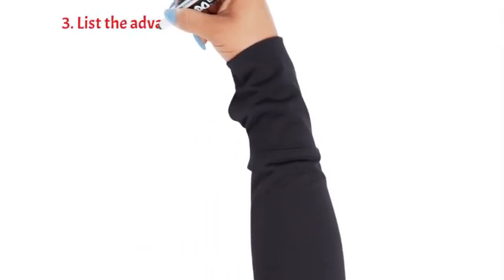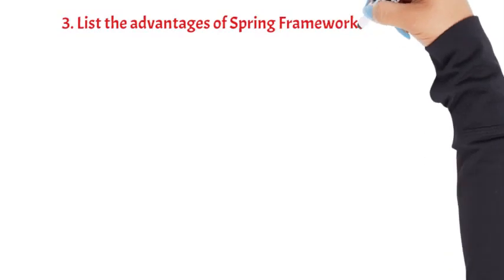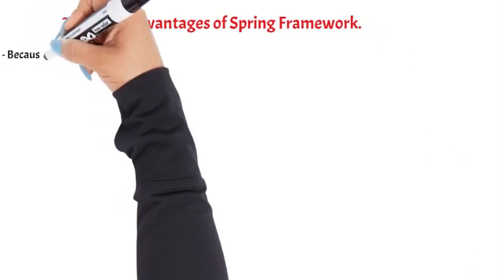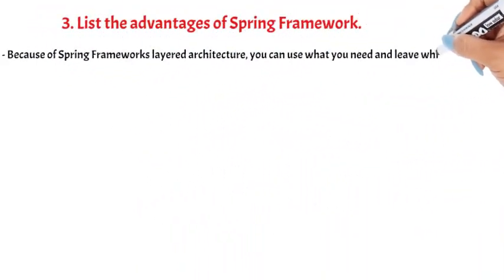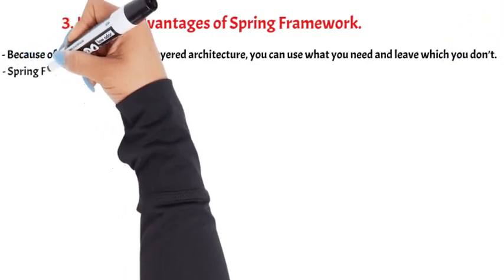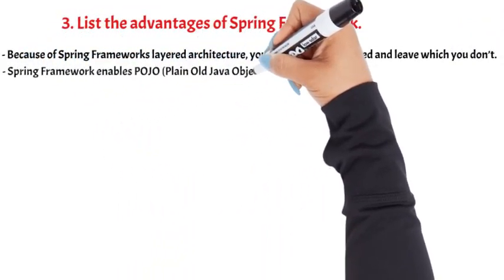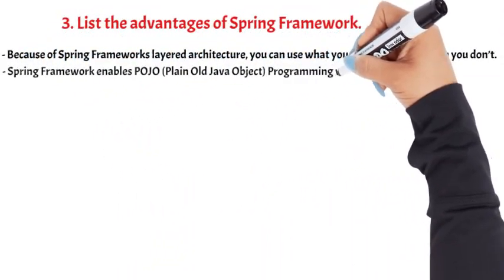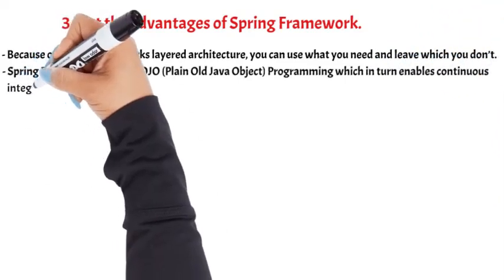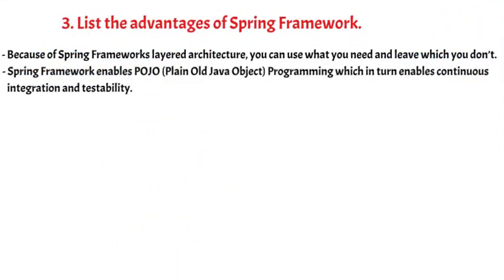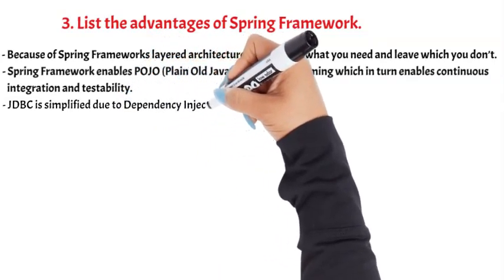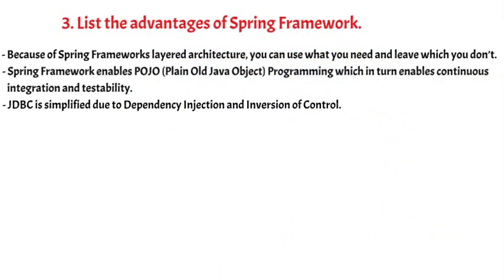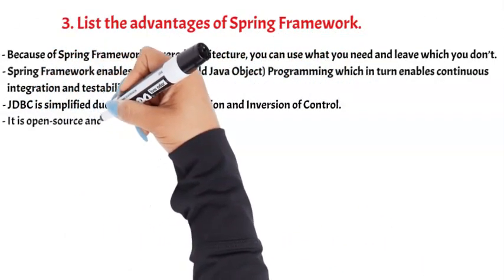Question 3: List the advantages of Spring Framework. Because of Spring Framework's layered architecture, you can use what you need and leave what you don't. Spring Framework enables POJO (plain old Java object) programming, which in turn enables continuous integration and testability. JDBC is simplified due to dependency injection and inversion of control. It is open-source and has no vendor lock-in.